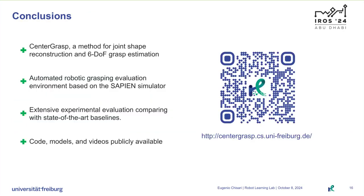To conclude, we proposed CenterGrasp, a novel method for joint shape reconstruction and 6 degrees of freedom grasp estimation. We implemented an automated 6DOF robotic grasping evaluation environment based on the Sapien simulator. We carried out extensive experimental evaluation comparing CenterGrasp with GIGA, a state-of-the-art baseline. We make the code, models, and videos publicly available. Thank you for listening.